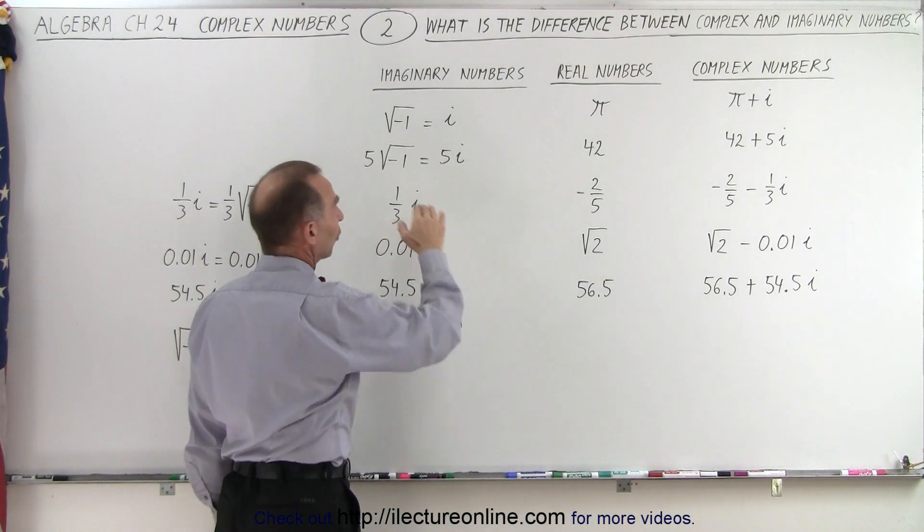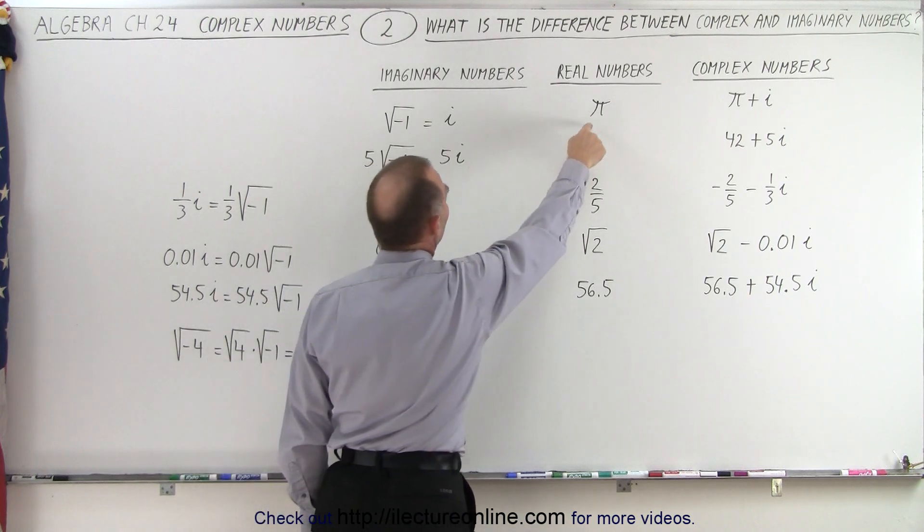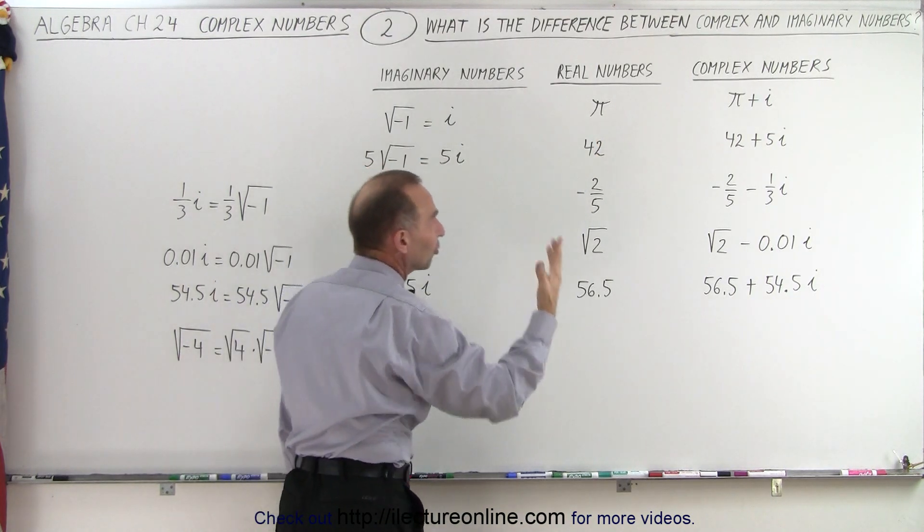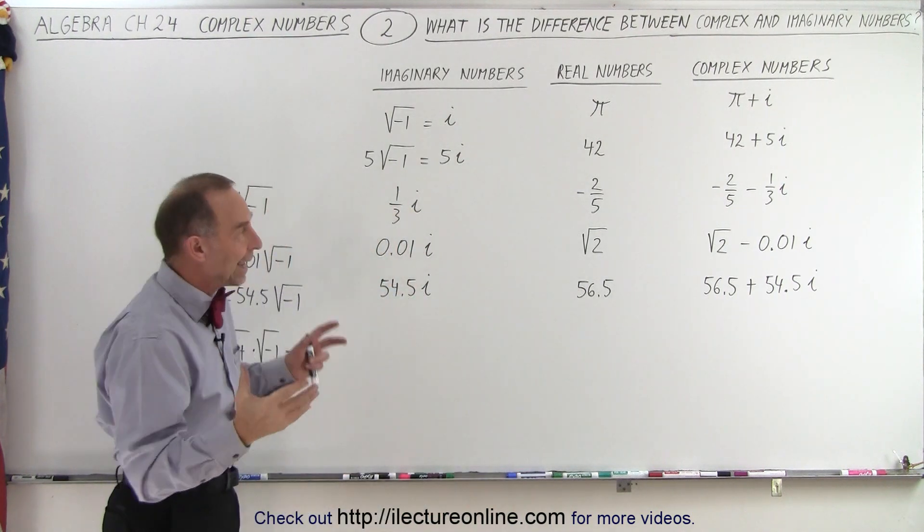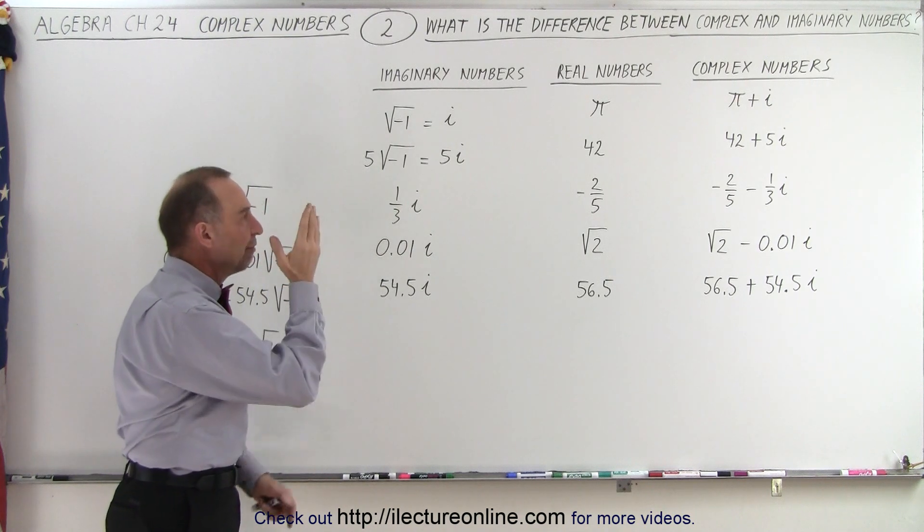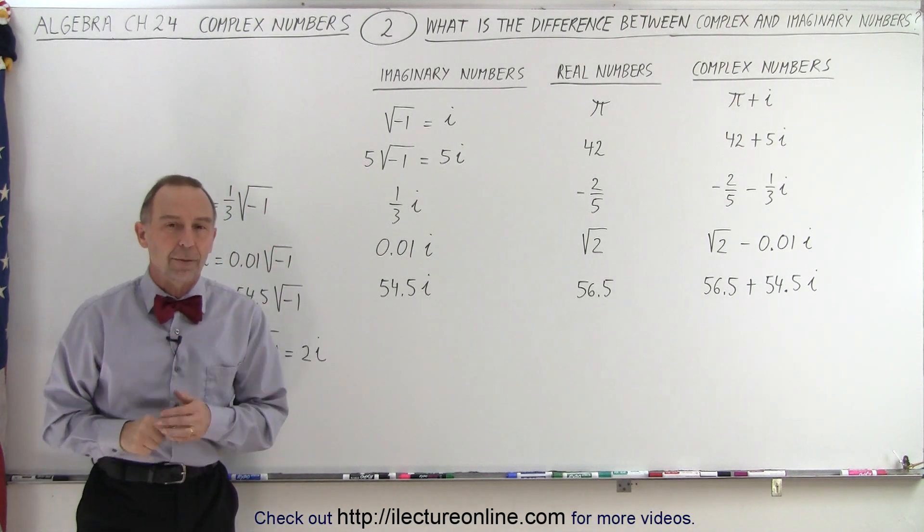And also, of course, we don't have to add them line by line. We can add pi to 1 third i and we can have pi plus 1 third i, which is a complex number. So it doesn't matter. Any sum of any imaginary number and any real number added together forms a complex number.